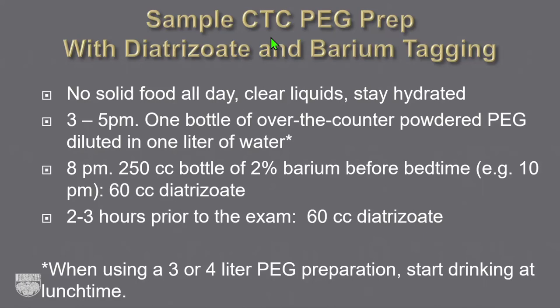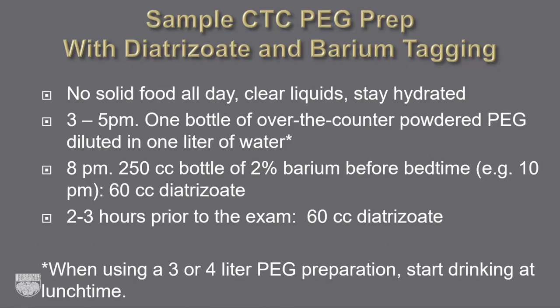Here's a sample CTC polyethylene glycol prep using diatrizoate and barium — a highly recommended combination. No solid food all day; clear liquids; stay hydrated. In the afternoon between 3 and 5, take an over-the-counter powdered PEG diluted in water. In the evening, take a 250 cc bottle of 2% barium at bedtime, 60 cc diatrizoate, and an additional dose of diatrizoate two to three hours before the exam. Diatrizoate is hyperosmotic, giving an additional kick to the prep. Using over-the-counter powdered PEG doesn't require a prescription.